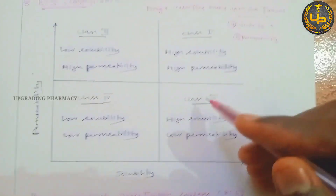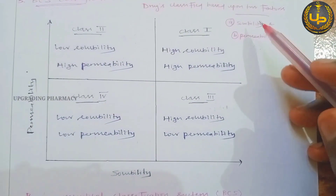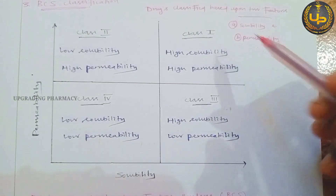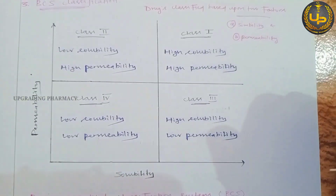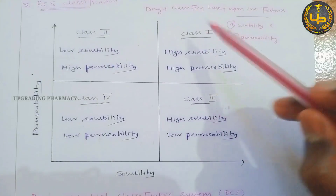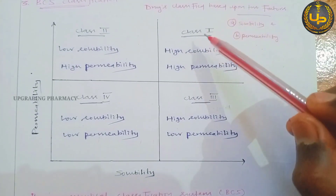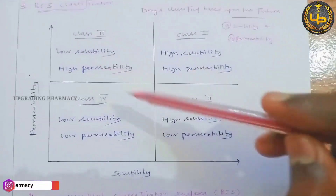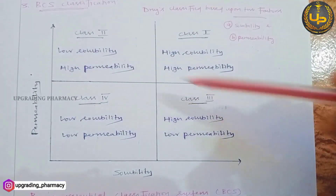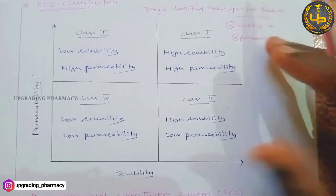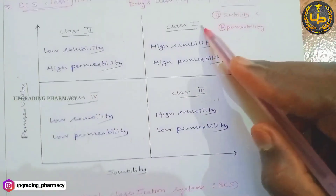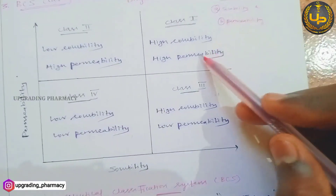According to solubility and permeability, drugs are classified into four classes: Class 1, Class 2, Class 3, and Class 4.